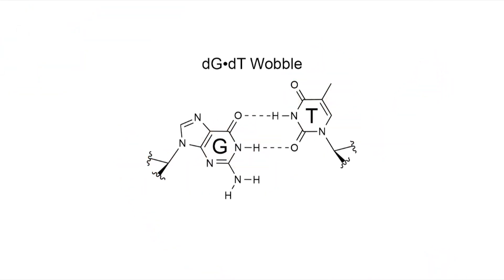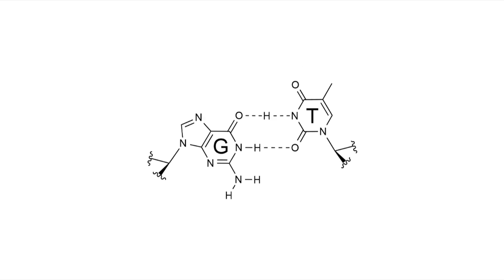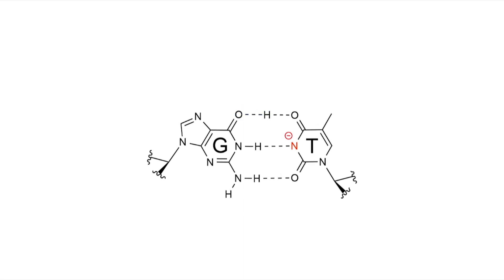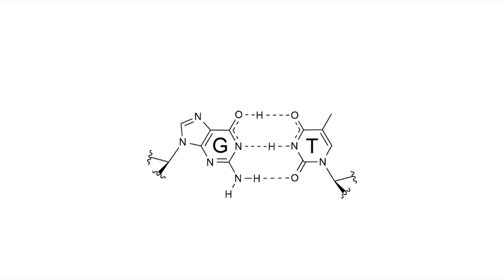We've discovered essentially what Watson and Crick hypothesized — that the bases in a DNA duplex can undergo these transitions to very rare and very fleeting states that allow mispairs to adopt a geometry that looks like a normal Watson-Crick pair, but is not a normal Watson-Crick pair.